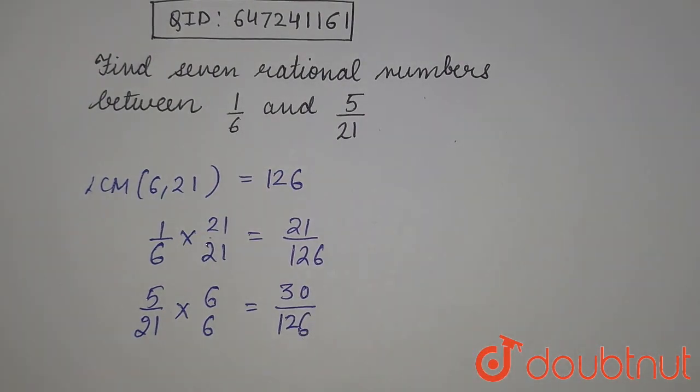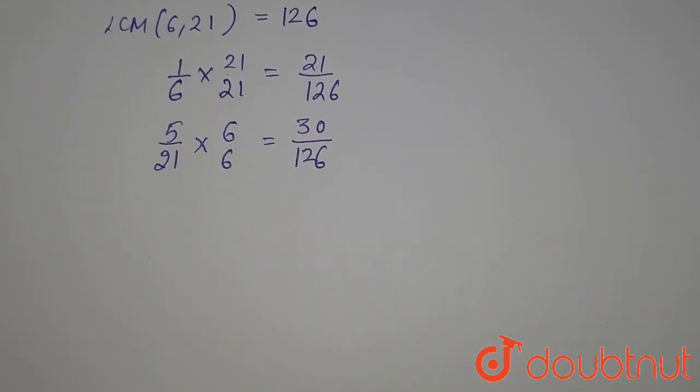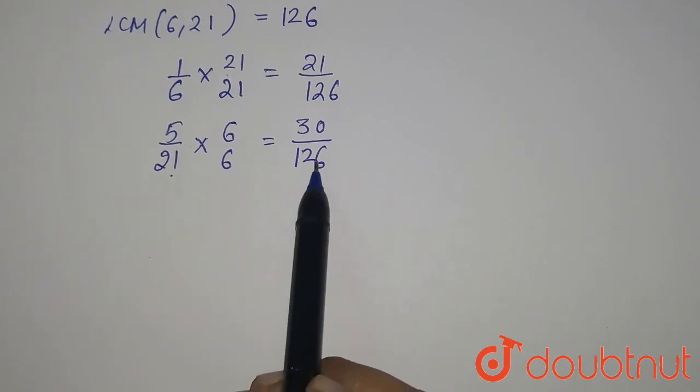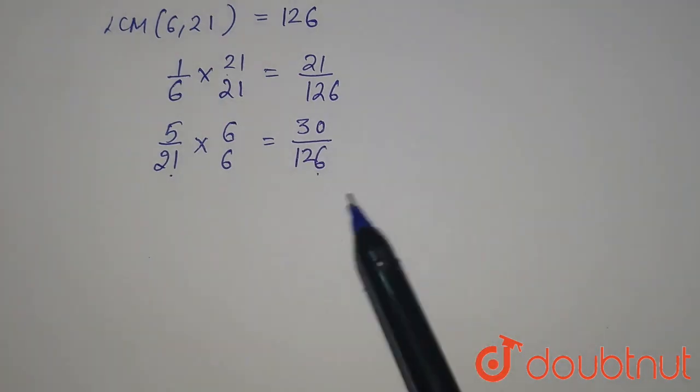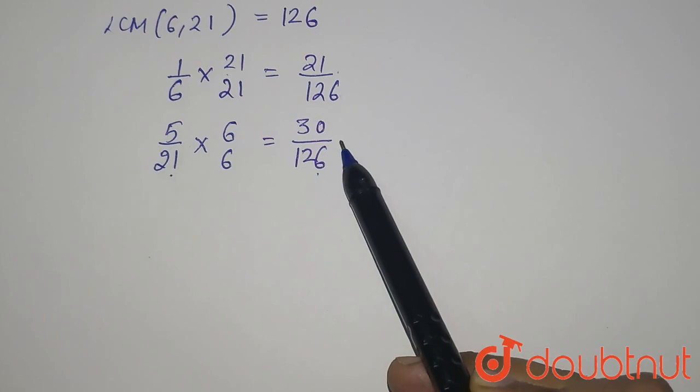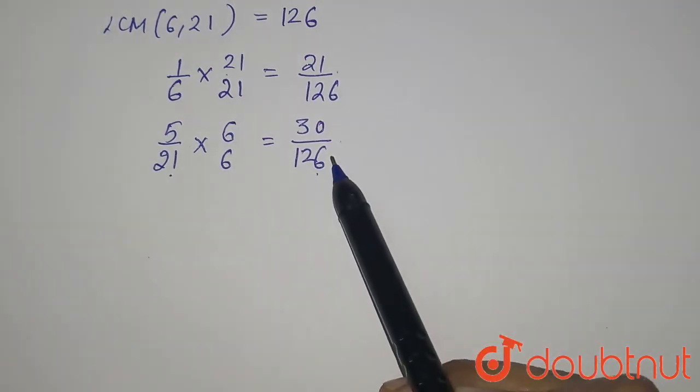What do we have in our numbers? First of all, we have 1 by 6 and 5 by 21. 1 by 6 is nothing but 21 by 126 and 5 by 21 is nothing but 30 by 126. So, we need to find the rational numbers between 21 by 126 and 30 by 126. Now, we can remove it because the denominators are the same.